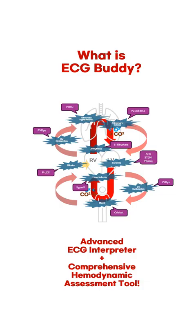What are the uses of ECG Buddy? Primarily, ECG Buddy is an advanced ECG analysis AI service that accurately and objectively assesses the risks of arrhythmias, myocardial ischemia, and hyperkalemia. But that's not all. As shown in the illustration, ECG Buddy is an innovative tool that can help its users evaluate both systemic and pulmonary circulation by providing various digital biomarkers.